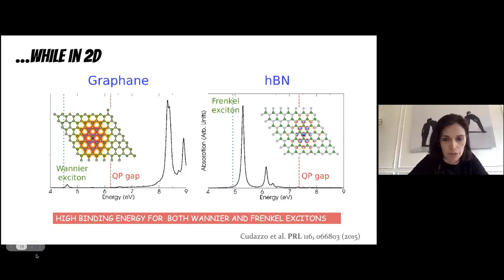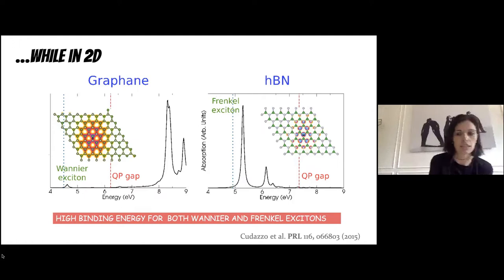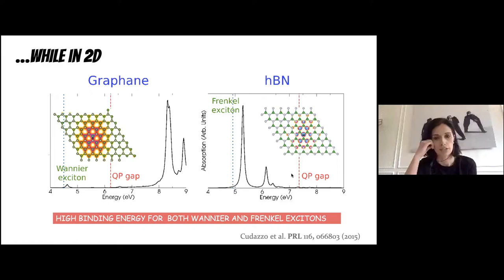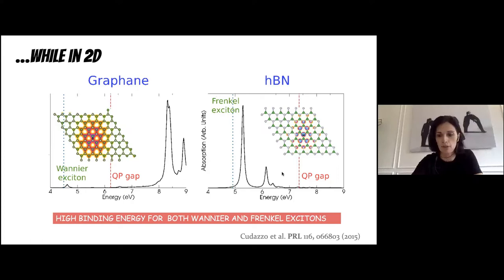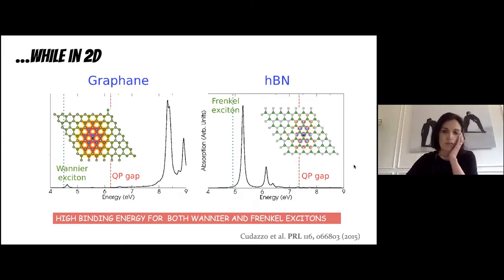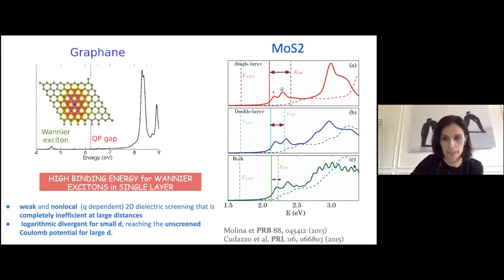When people first examined these systems, they found that the exciton binding energy was large even for the supposedly delocalized Wannier excitons. This is because in low-dimensional systems the screening is much less efficient. For Frenkel excitons it doesn't change much, since at very short distances the electric screening is less relevant, but for Wannier excitons this changes a lot — the binding energy becomes larger and comparable to the Frenkel one. A nice paper by Pier Luigi and colleagues at Palaiseau confirmed that the binding energy increases by reducing dimensionality for molybdenum disulfide.